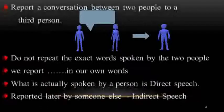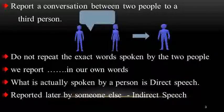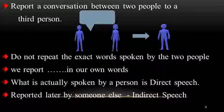We often report a conversation between two people to a third person. In such a case, we do not repeat the exact words spoken by the two people. Instead, we report what they said in our own words. What is actually spoken by a person is direct speech. When it is reported later by someone else, it becomes indirect speech.